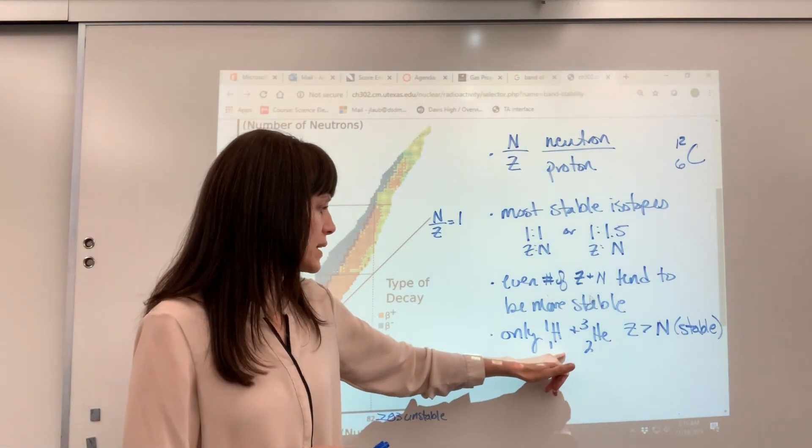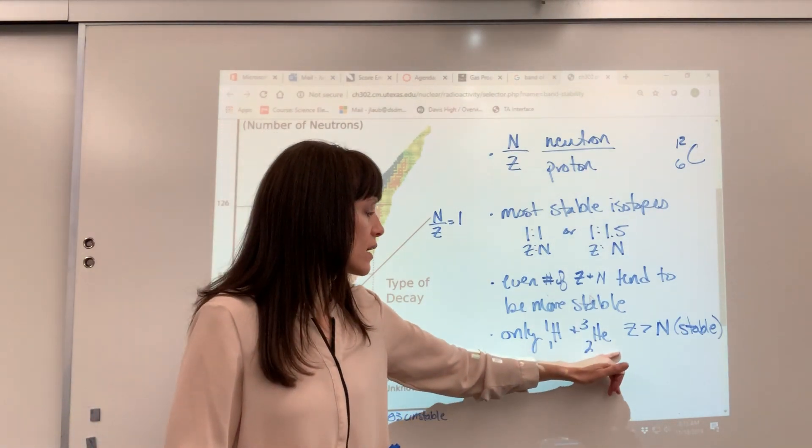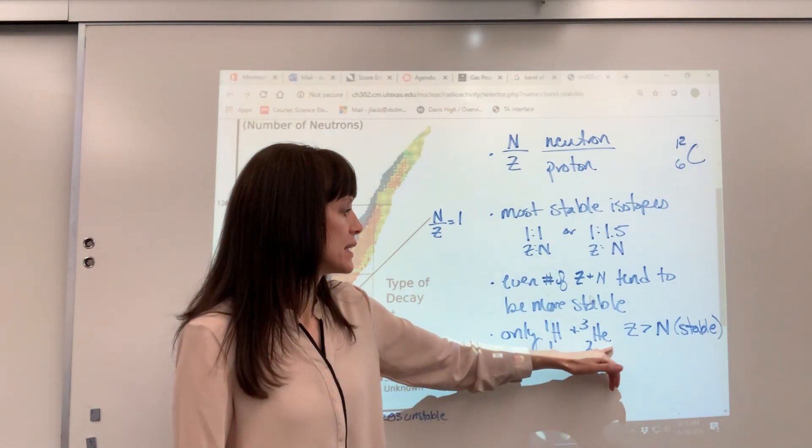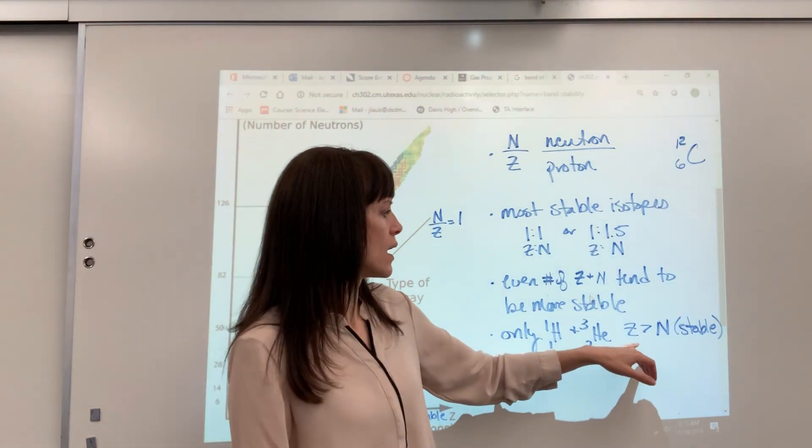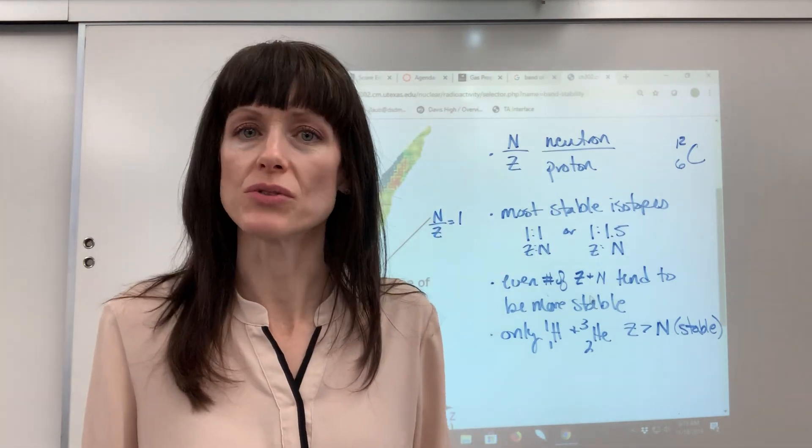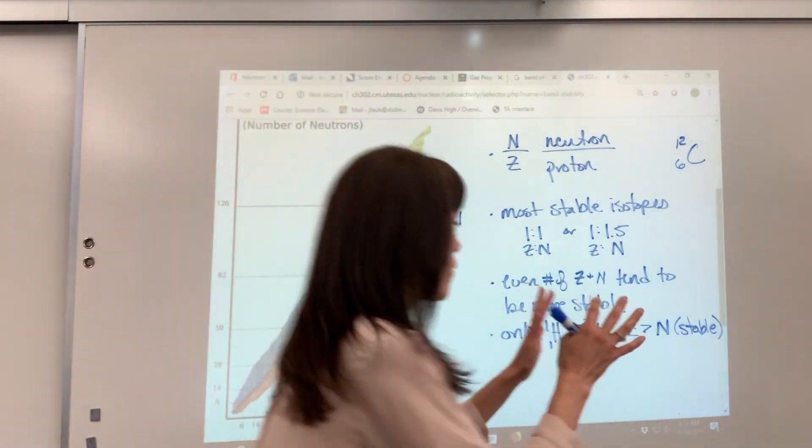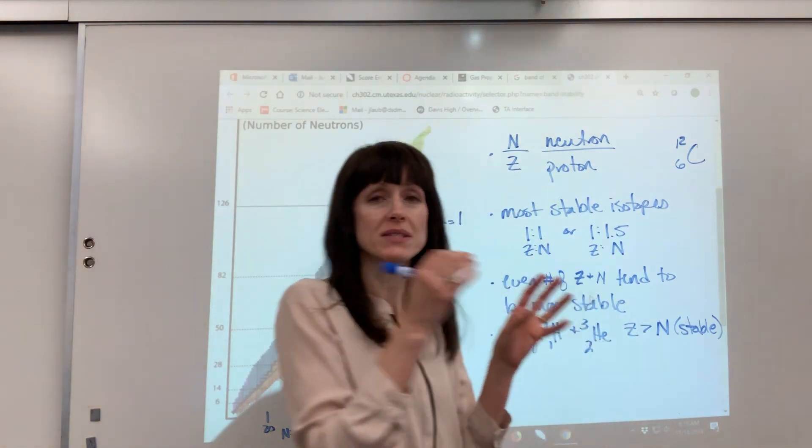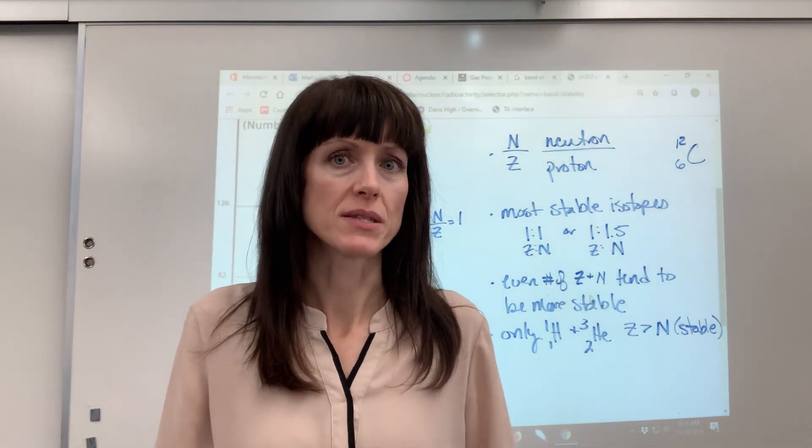This is kind of interesting. Only our proton, so this is going to be helium-1, and our, excuse me, our hydrogen-1 and our helium-3, they're the only examples of isotopes where they actually have more protons than neutrons, and they're stable. Those are the only two examples where we have stable isotopes where there's more protons.